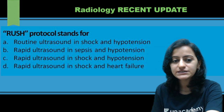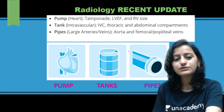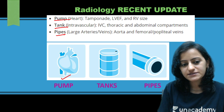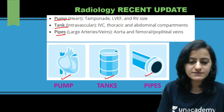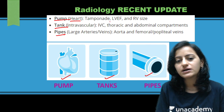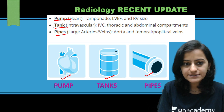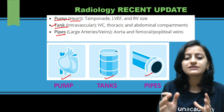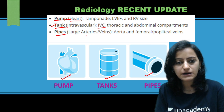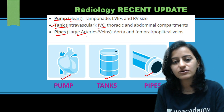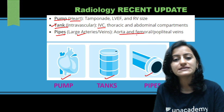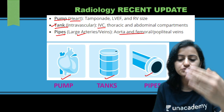The RUSH protocol includes evaluation of three components: the pump, the tank, and the pipes. The pump is the evaluation of the heart — for tamponade, RV size, and related findings. The tank refers to the intravascular compartment including the IVC, thoracic, and abdominal compartments. The pipes refer to large arteries and veins like the aorta and the femoral or popliteal veins.